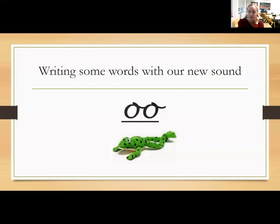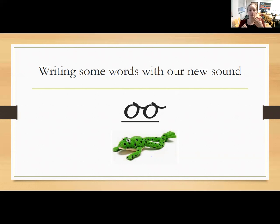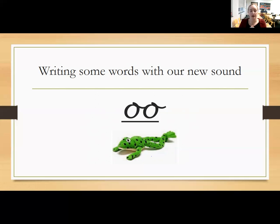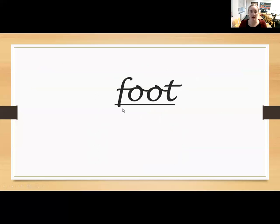So now we're going to have a go at writing some words with our new sound in. We need to wake up our red fingers, give them a shake, and then hide one. My first word is 'foot.' Check the sounds in foot — you should have three sounds. My turn first: F-U-T, foot. Your turn. Have a go at writing that down. Let's check — the word foot should have F-U-T, foot. Well done if you got that correct.